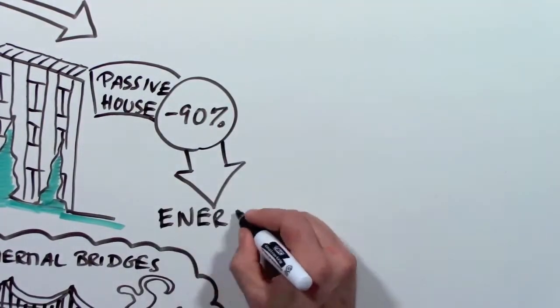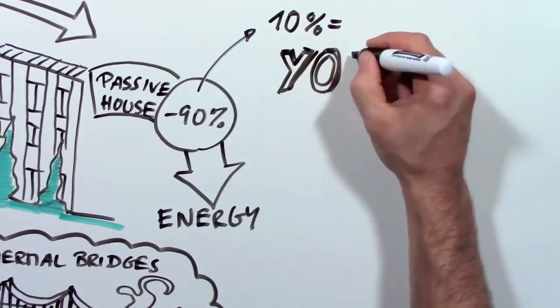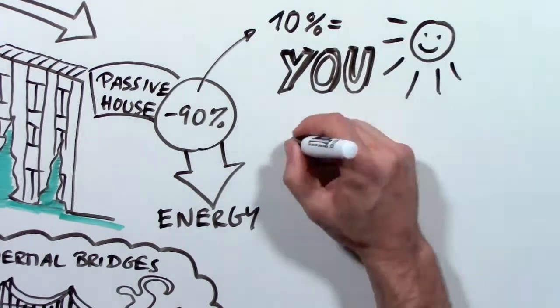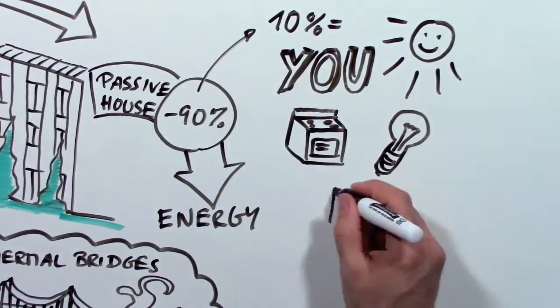A Passive House needs 90% less energy, and that can easily be supplied by your body heat, the sun, your appliances, light bulbs, and even your TV.